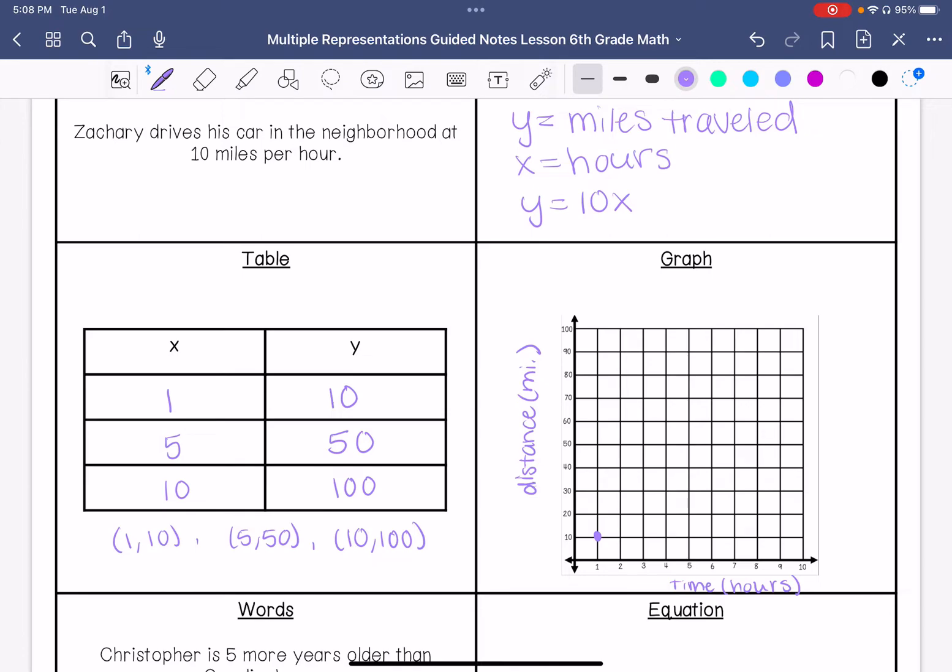So for 1 he traveled 10 miles, 5 he traveled 50, and 10 he traveled 100. So that is what my graph is going to look like. This is a multiplicative relationship. It goes through the origin.